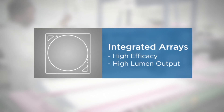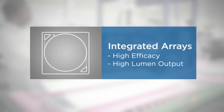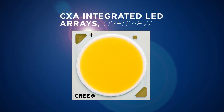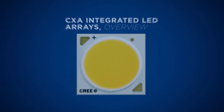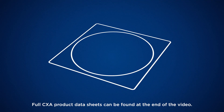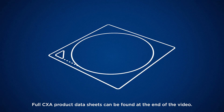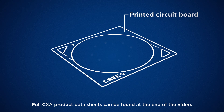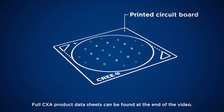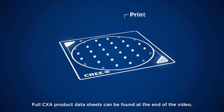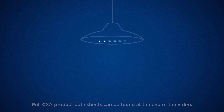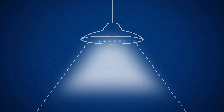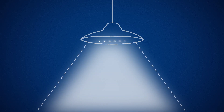There are many benefits and practical solutions to using CXAs to design your next light. In an integrated array, LEDs are positioned into a single, uniform light source and come pre-attached to a printed circuit board. All you have to do is attach power to the CXA and you can focus on designing the rest of your light. This eliminates some time-consuming steps in the design process.